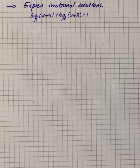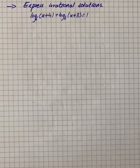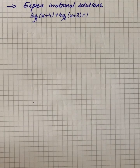Here we have a question that says express irrational solutions, and we have log₆(x+4) + log₆(x+6) that is equal to 0. If the base of the logarithms are equal, then we can use logarithm properties.